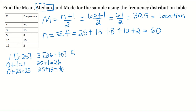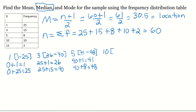For value 5: lower boundary is 40 + 1 = 41, upper boundary is 40 + 8 = 48. For value 10: lower boundary is 41 + 1... then I take 41 and add the frequency of 10, which gives 51.